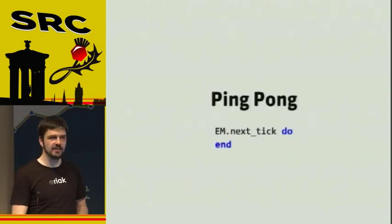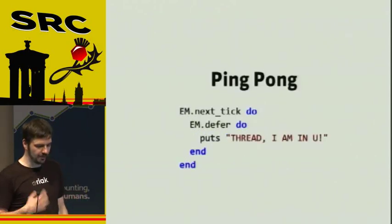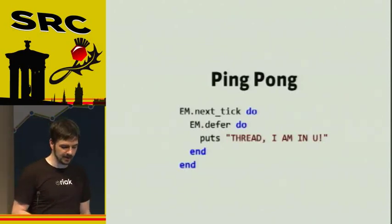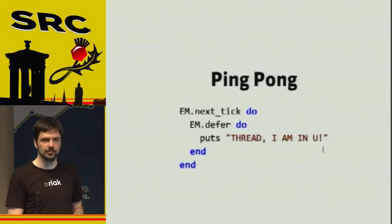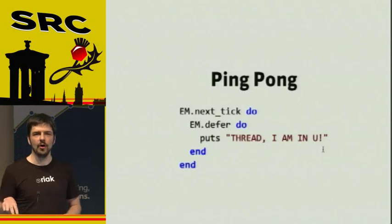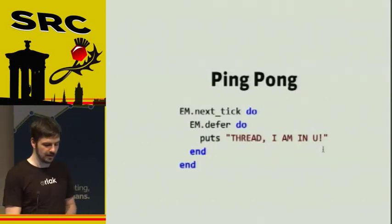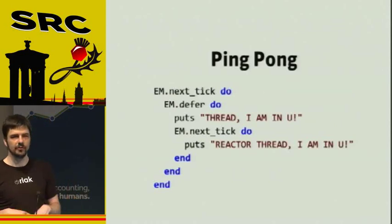You can combine next_tick and defer to do funky stuff. From next_tick you schedule something to run in a different thread, and that piece of code will run in one of the threads in EventMachine's thread pool. And since IO always has to come back on the reactor thread, to do that you just use next_tick again, because next_tick will make sure that block runs on the reactor thread.